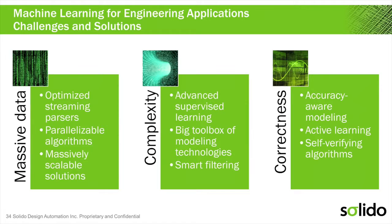First, massive data — certainly we have a lot of data in any machine learning application. What's unique in engineering is that a lot of it is streaming data. We collect historic data but we're also collecting data in real time as we run analyses, and we need to analyze it in real time. Second, this stuff is complicated — we can make very few assumptions about the data's nature, there are a lot of dimensions. Third, in engineering our bridges need to stand and our chips need to work — we can't bet our designs on estimates. We need really good evidence that our answers are correct.